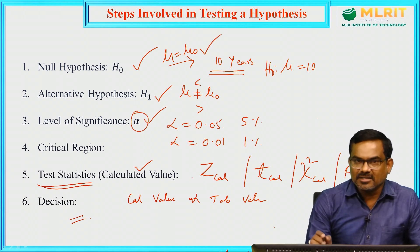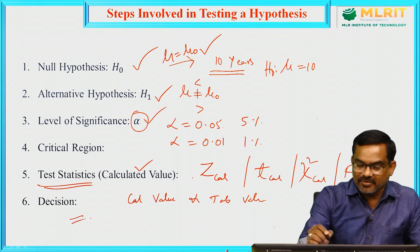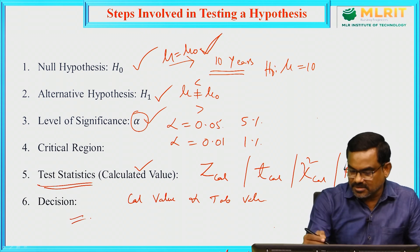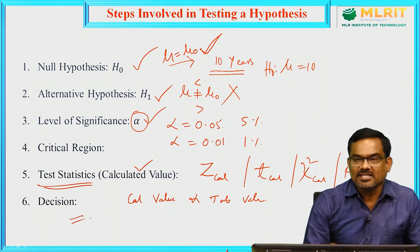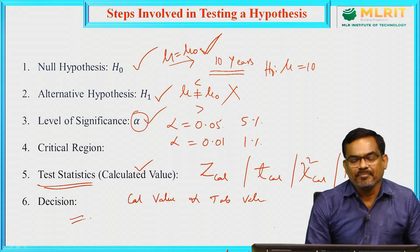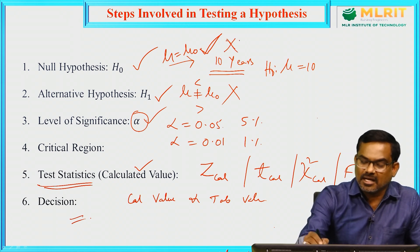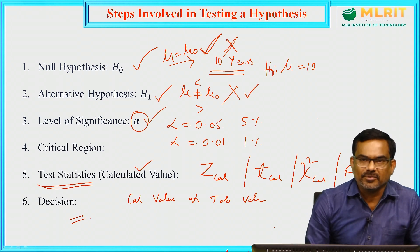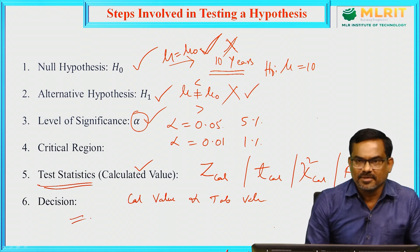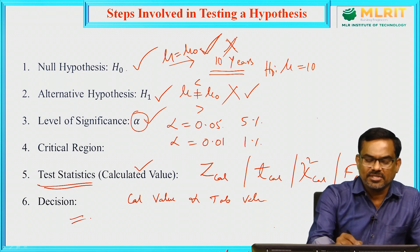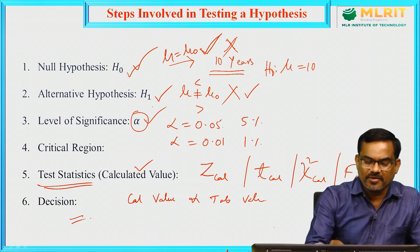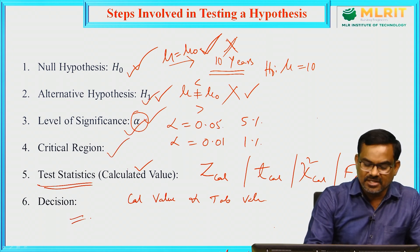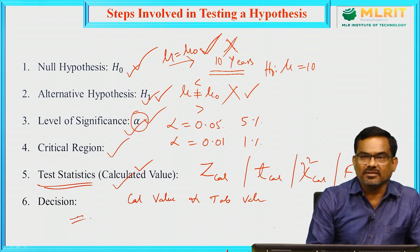An important point: if we are accepting the null hypothesis, we are simultaneously rejecting the alternative hypothesis. If we are rejecting the null hypothesis, we have to accept the alternative hypothesis. So the main steps involved in testing a hypothesis are: null hypothesis H naught, alternative hypothesis, level of significance, critical region, test statistic, and the final decision.